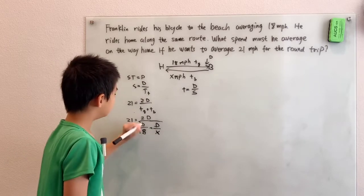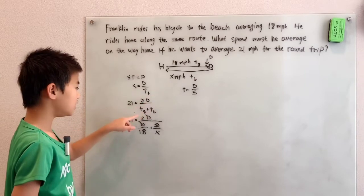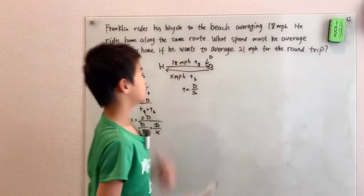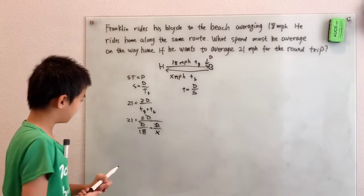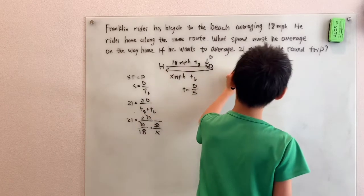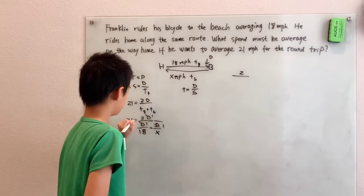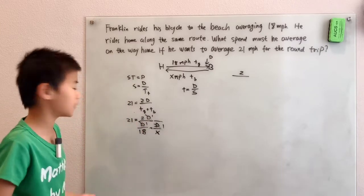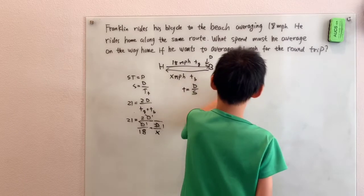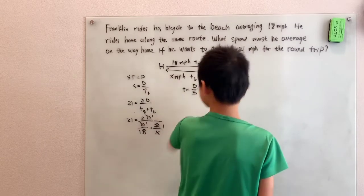And now what we see is these Ds, we can all cancel them. And now we went from having three variables, D, TG, and TB into just one variable. And that variable x happens to be the variable that we want. So the Ds cancel, so 2 times 1 is 2. Remember, the Ds don't go away completely. When they cancel, you still leave a 1 there. So we have 1 over 18 plus 1 over x.